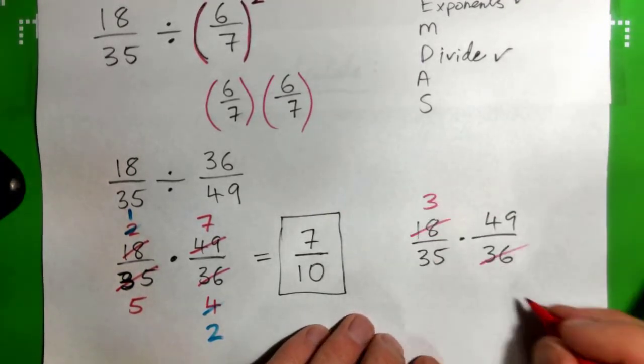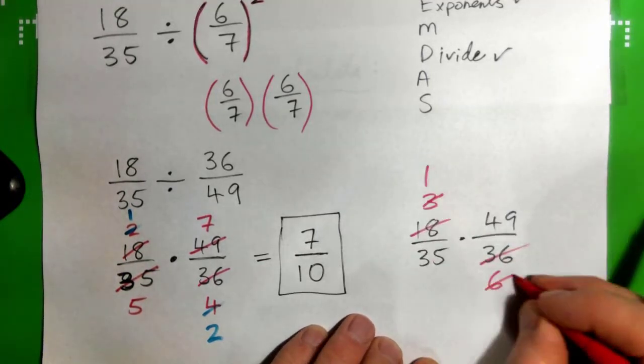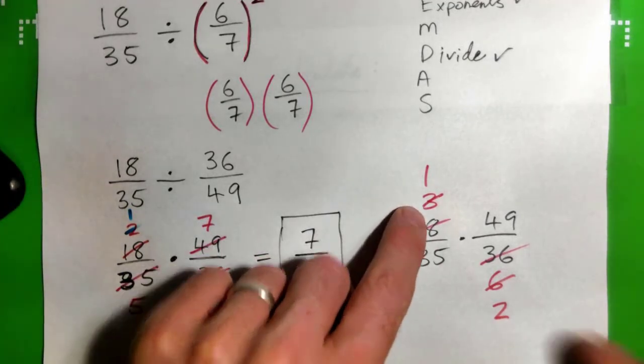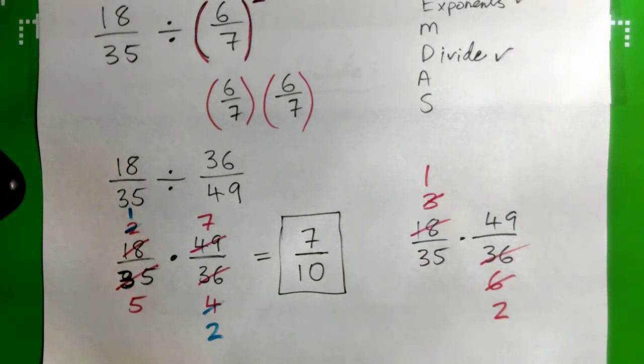Six into eighteen three times, six into thirty-six six times. Three into that goes once, three into that goes twice. It ends up being the same thing. Or just eighteen into eighteen goes once, eighteen into thirty-six goes two times. A number of ways of doing it would have been fine.